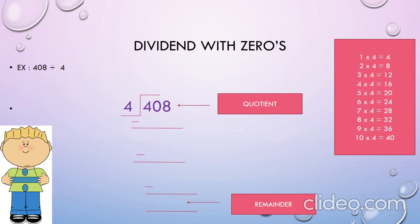Shall we see one more example? Dividend with zeros: 408 divided by 4. Now let's first divide 4 by 4. By using the tables of 4, we will get 4 by multiplying 1 with 4. Let's write 1 in the hundreds place of the quotient and 4 below 4. Let's subtract 4 minus 4, which gives 0. Now bring down the next digit, that is 0.